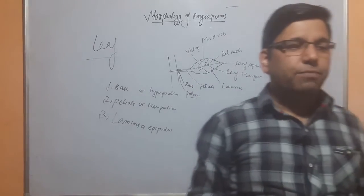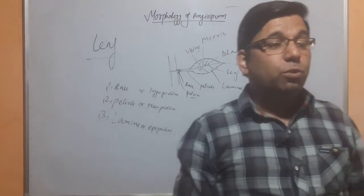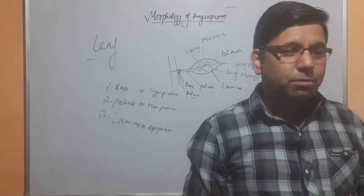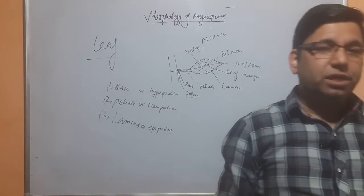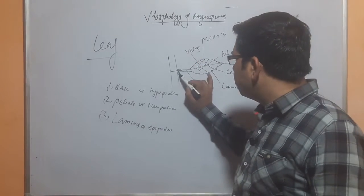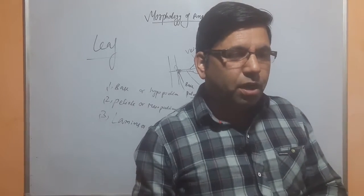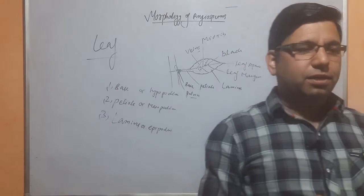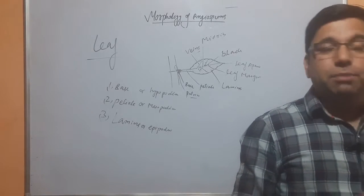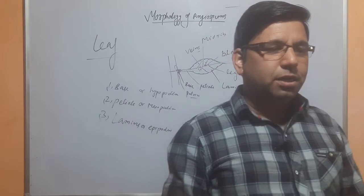So the leaf has three parts: leaf base, petiole, and lamina. The leaf base is also called hypopodium. When swollen, it is called a pulvinus. There are also stipules — two appendages associated with the leaf base. There is also a ligule and other structures. The petiole is called mesopodium. The lamina, or leaf blade, has two sides.